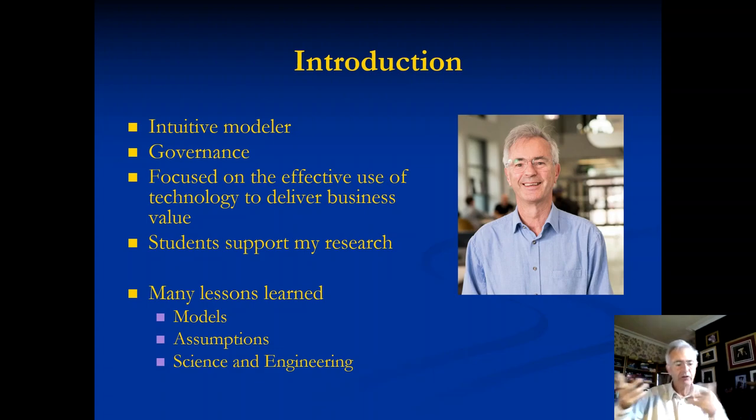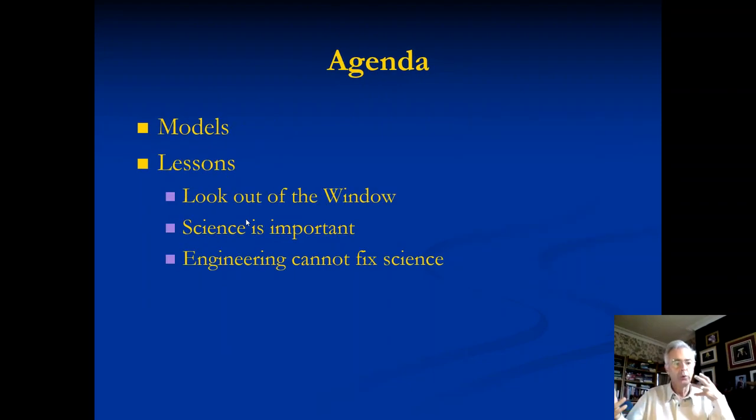Now as we move in, I want to be talking about models. I'll be looking at what are models, how do we think about models, how do we use models for thinking. From that come three crucially important lessons which these last few months have very much focused on. These are critical questions about our models, about our analytics, about our AI and machine learning. Those lessons are: look out the window, that science is important, and that sometimes engineering will not be able to fix science.